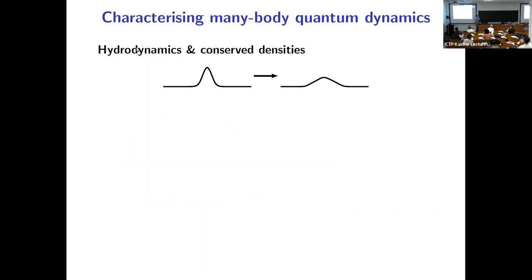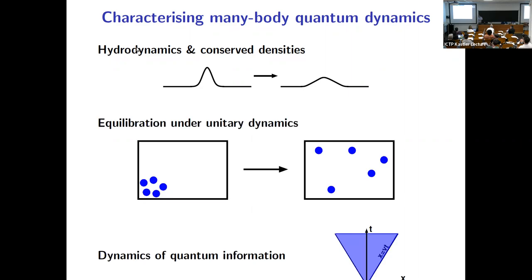There have been real advances in thinking about dynamics in many-body quantum systems in the high temperature, highly excited regime. While traditionally we've thought about what happens at long times in terms of hydrodynamics for conserved quantities, we now have ways of thinking about equilibration of an isolated system evolving under unitary dynamics in terms of other slow degrees of freedom aside from the ones connected with local conservation laws.